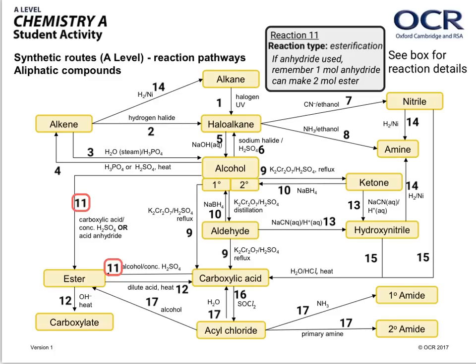Reaction number 11 is esterification — you can probably guess that from the product. If you use the anhydride instead of a carboxylic acid, don't forget the anhydride functional group can break into two moles of carboxylic acid because it's essentially two carboxylic acids joined together. Once it's reacted with water it produces two moles of carboxylic acid, so you'll get two moles of ester for every one mole of anhydride. It's always worth remembering this when balancing equations for this reaction.